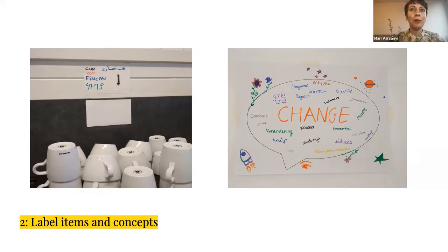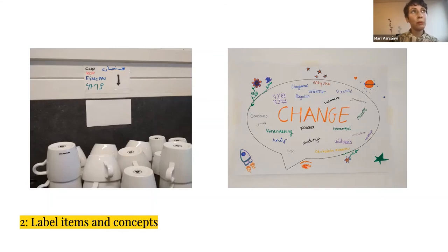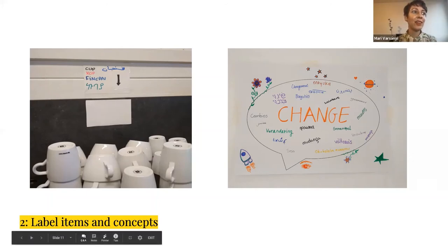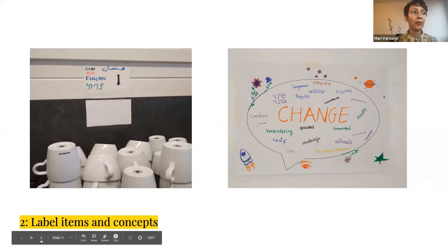Another labeling activity: I created a poster with the word 'change' when starting a new unit on community. I gave students the main concepts and asked them to translate all words into their languages. They were very enthusiastic and even decorated the posters without being asked — they felt ownership of it. We put up all these posters in the classroom for the duration of the topic so students could fall back on them anytime they forgot what 'change' actually meant.